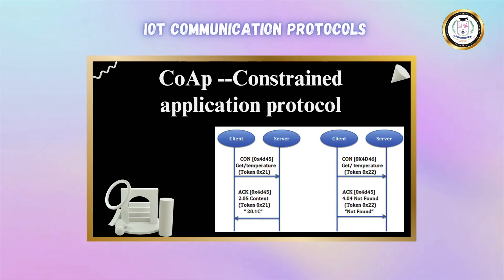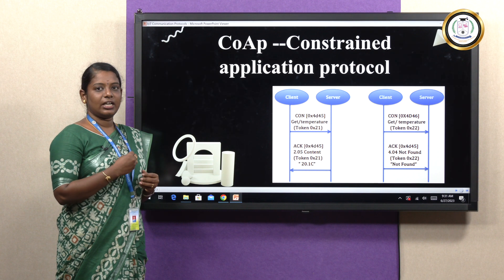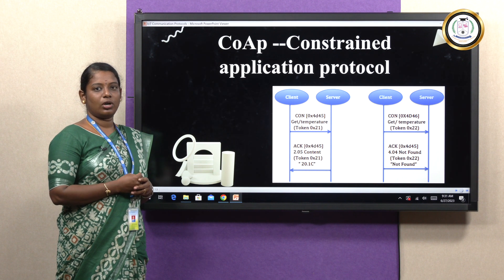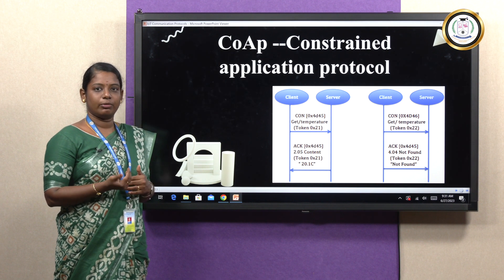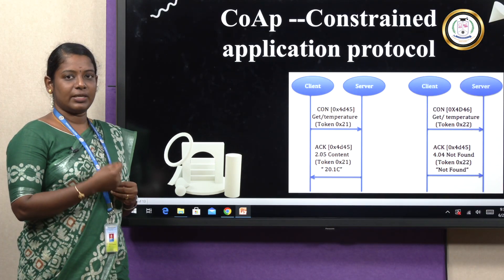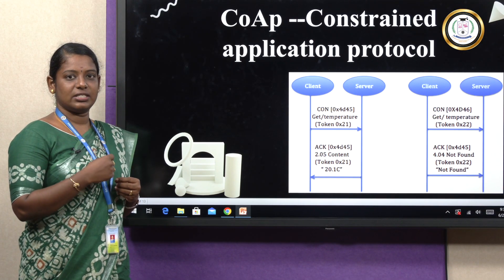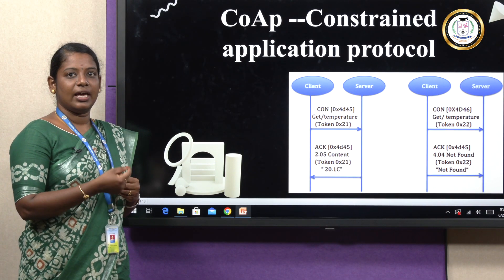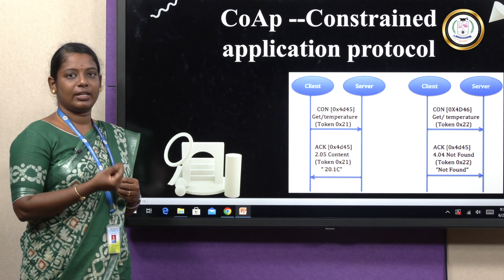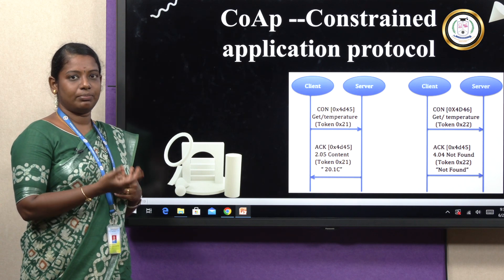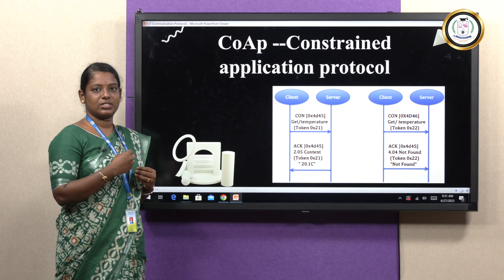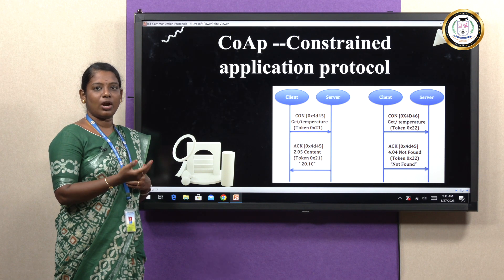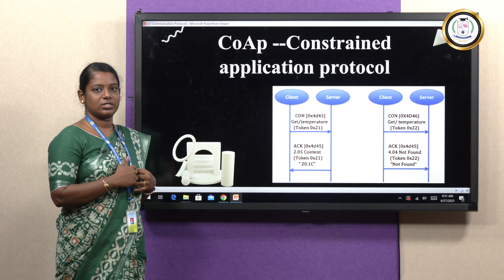Next is the COAP protocol, which is the Constrained Application Protocol. This protocol works in the form of confirmable and non-confirmable messages. Confirmable messages mean that once a message is requested, it will wait for the response or acknowledgement from the server. Non-confirmable messages mean the information sent will not receive any acknowledgement or response.